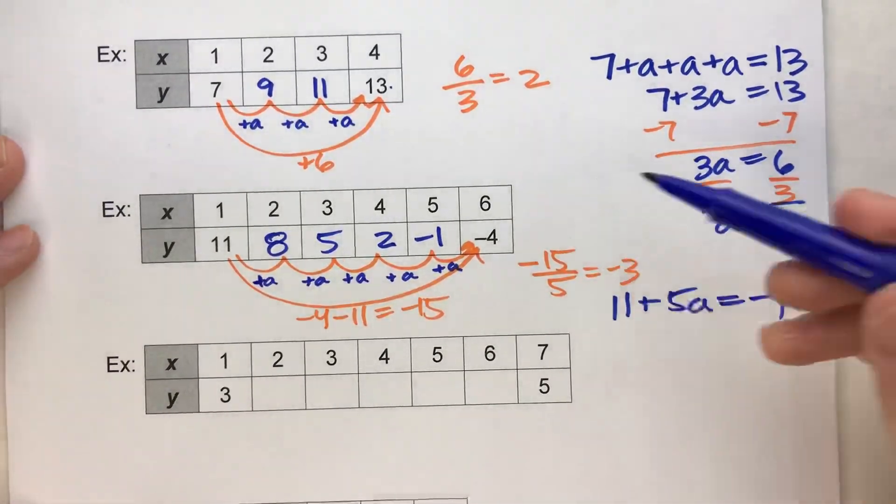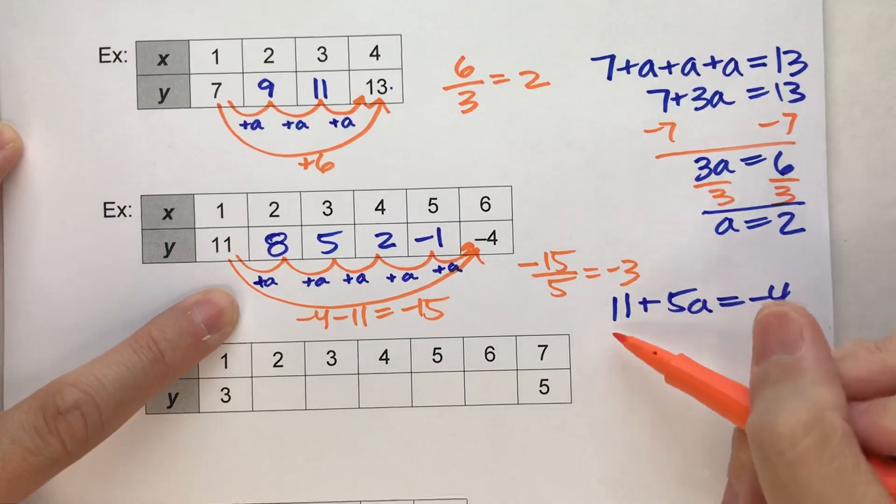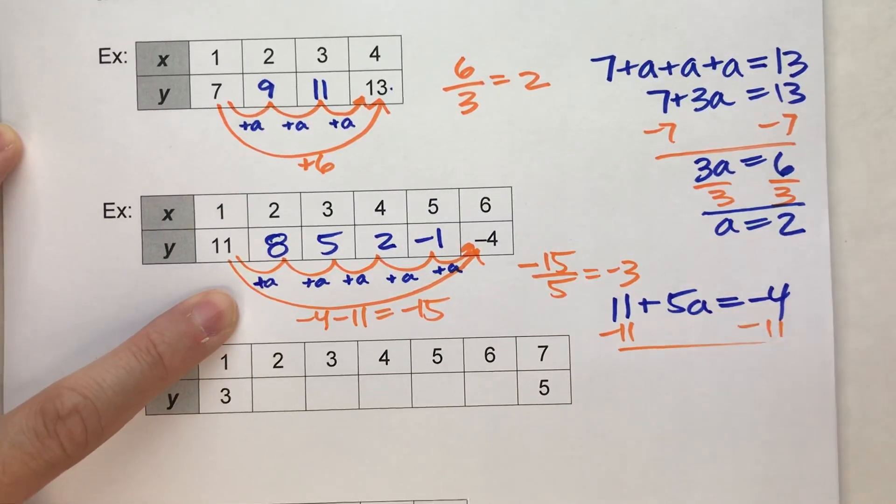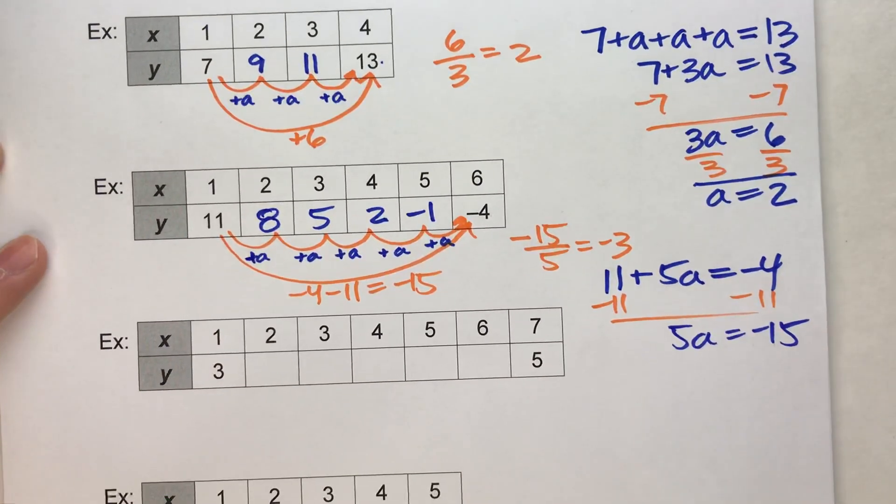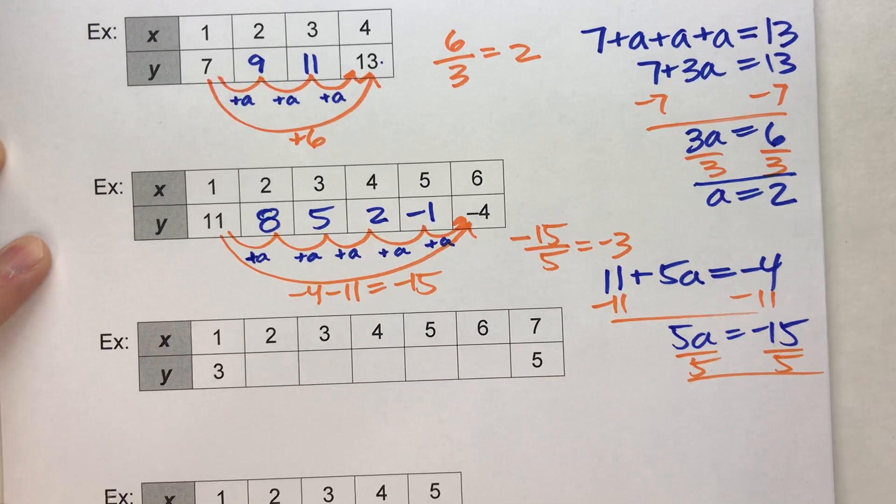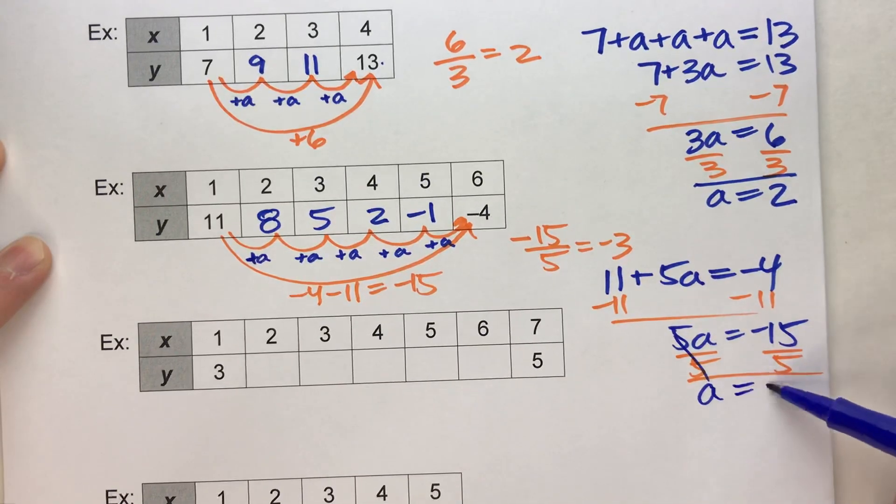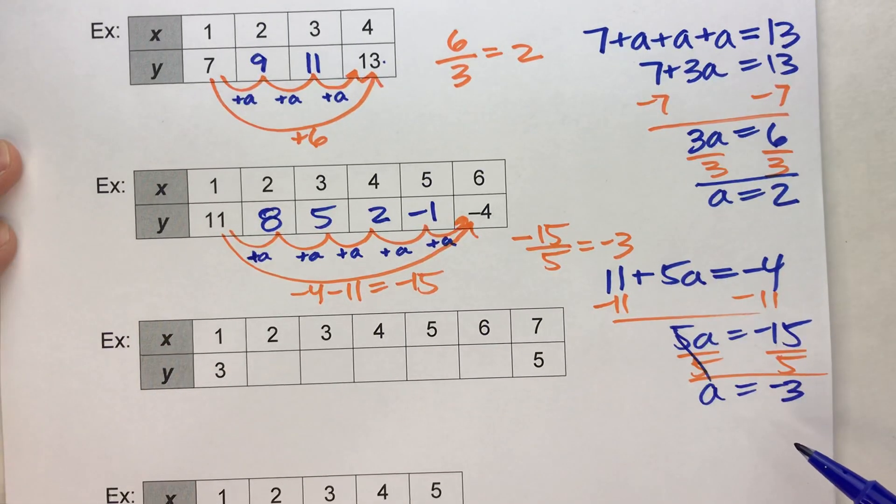So we can solve this equation to figure out how much it was going up by. So if I subtract 11 on both sides, I get 5A equals negative 15. Divide both sides by 5. And A equals negative 3. So we could have figured out it was negative 3 that way also.